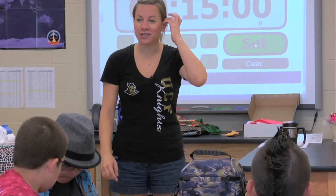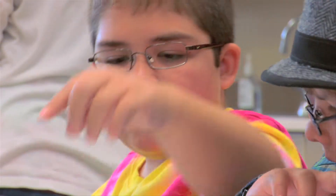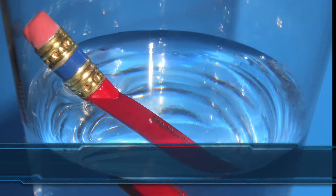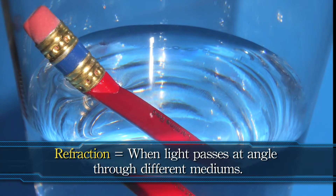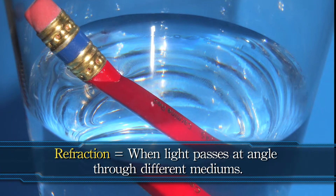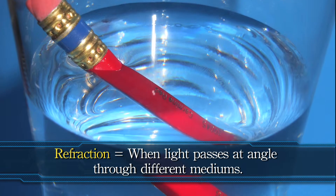We hope you enjoyed the laser beams lab. Now let's take a look at some of the concepts we discussed. You now know that when light passes at an angle from one medium to another, like air to water, the exit angle is different than the entry angle.